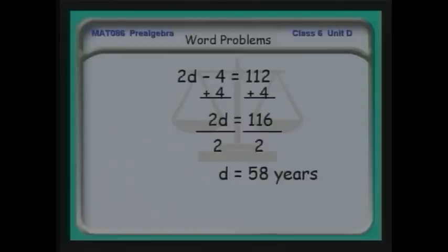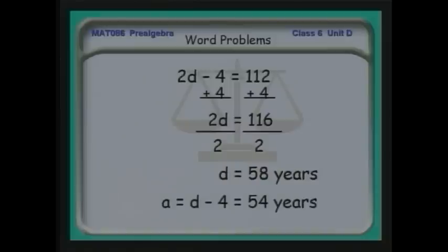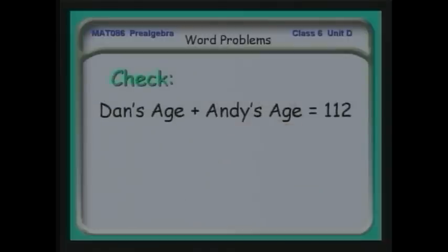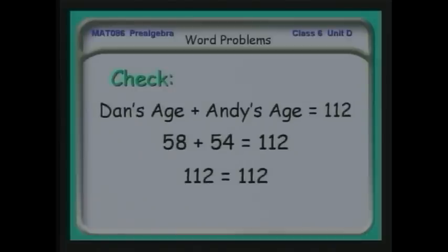We have Dan's age: 58 years. Andy's age is four less than Dan's — D minus four — so his age is 54 years. Let's check: Dan's age plus Andy's age should equal 112. 58 plus 54: 8 plus 4 is 12, 5 plus 5 is 10 — that's 112. So 112 equals 112. I've done this problem correctly.